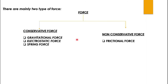Let me explain conservative force a bit better here. There is conservative force and there is non-conservative force. You have studied both of these before. Conservative force means the force is conserved. Non-conservative force means it will not be conserved. Examples you have studied: gravitational force is conservative force, electrostatic force is conservative force, and spring force is conservative force. Frictional force is a non-conservative force.